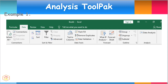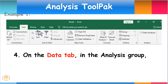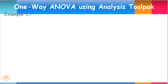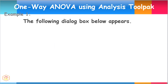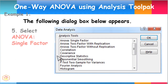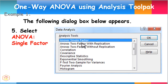Now that the ToolPak has been added, click on the Data tab menu. Then in the Analysis group found on the far right side of the menu, click on Data Analysis. After selecting the Data Analysis tab, the following dialog box appears. From the choices of different analysis tools, select ANOVA Single Factor and click OK.